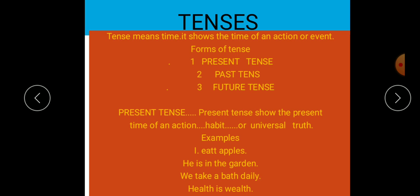Ab sawal hai ki tenses kitne tarah ke hote hain. We can say tenses have three forms. Tenses teen tarah ke hote hain. Okay kids, first is present tense, second is past tense, and third is future tense.